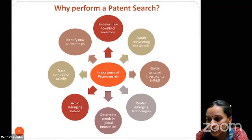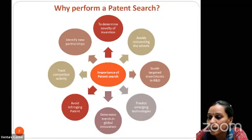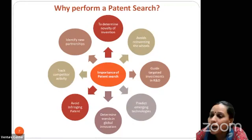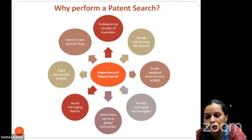Patent search can help determine global innovation trends — if a company needs to understand where technology is heading worldwide, a patent analytical report can be developed accordingly. It also helps avoid infringing active patents in a given field before marketing a product. Additionally, it can track what a competitor is doing and identify possible collaborations with other companies, investors, or new inventors. Different analytical reports cover each of these aspects.